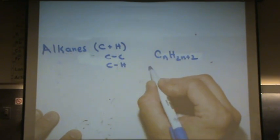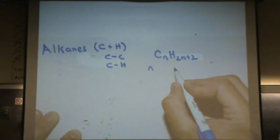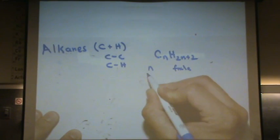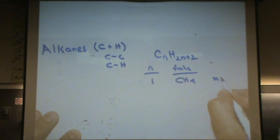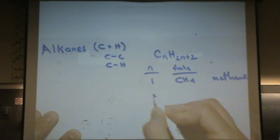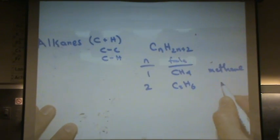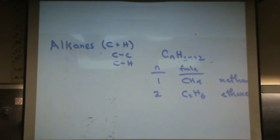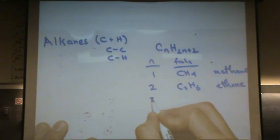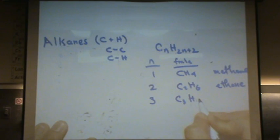For example, if I do n and then the formula, if n is 1, we've got CH4. What's that called? This is methane. We've got 2, that's C2H6, and that's ethane. In our 2A class, we did the simple naming of alkanes. 3 is C3H8, that's propane.